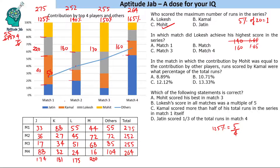Question 2: In which match did Lokesh achieve his highest score in the series? Lokesh's highest score came in match 1. This could not be answered from the graph alone, because a high percentage of a smaller total could still be less than a lower percentage of a larger total. That is why we needed the actual calculated values.